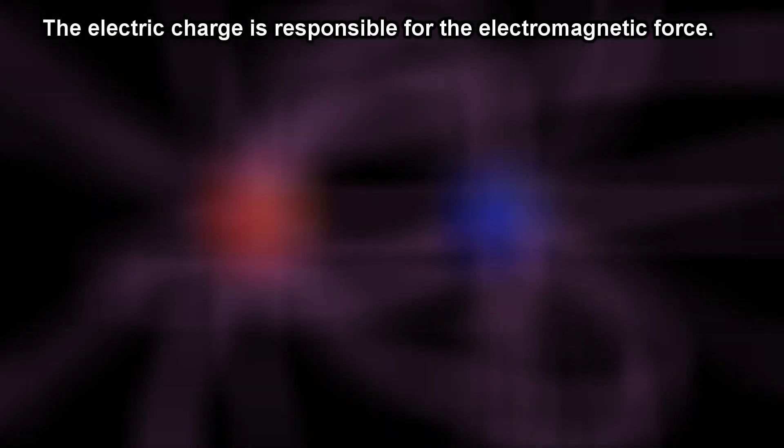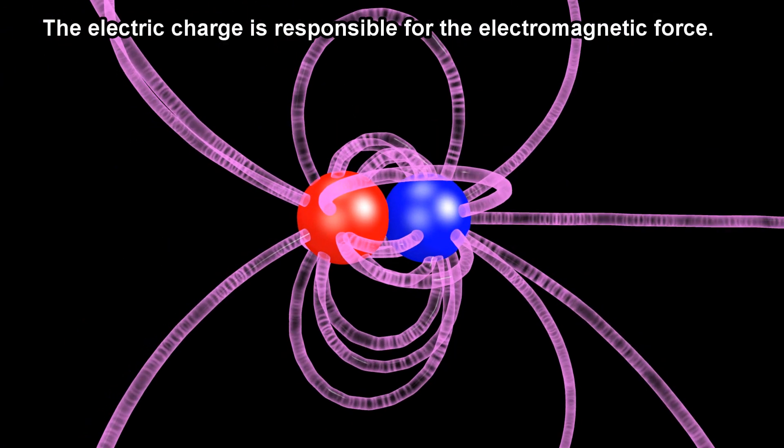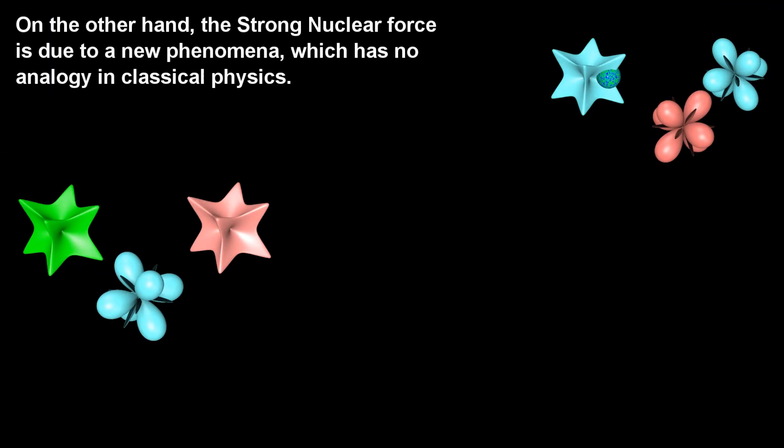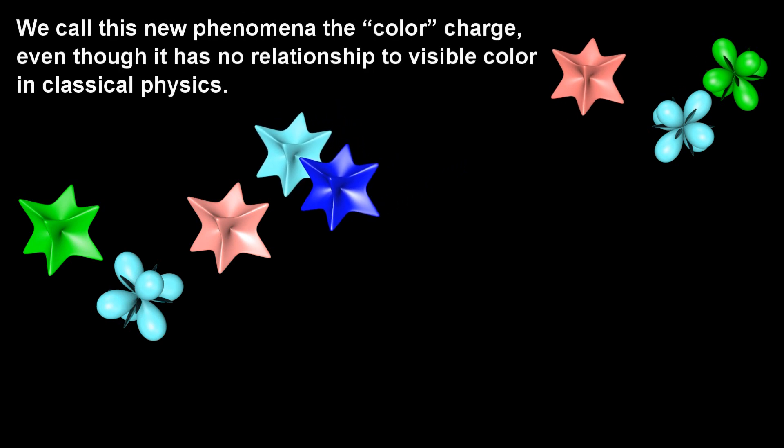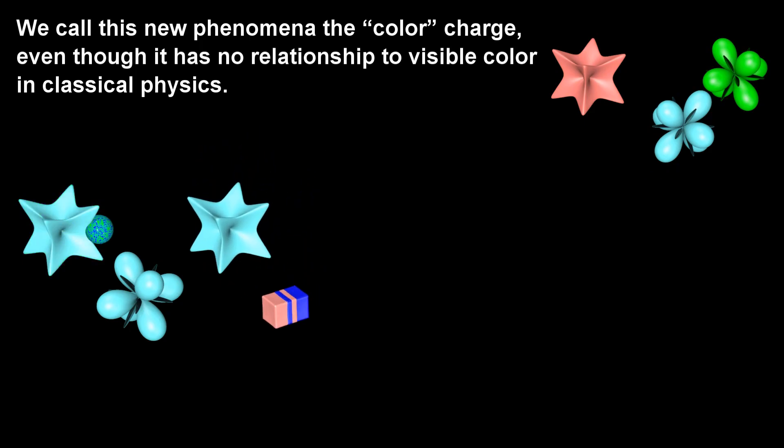The electric charge is responsible for the electromagnetic force. On the other hand, the strong nuclear force is due to a new phenomena, which has no analogy in classical physics. We call this new phenomena the color charge, even though it has no relationship to visible color in classical physics.